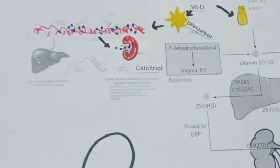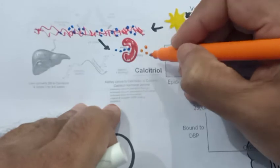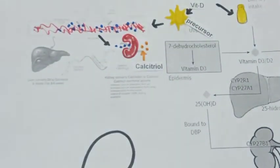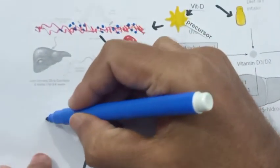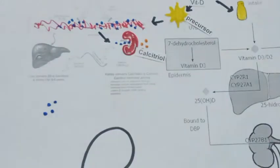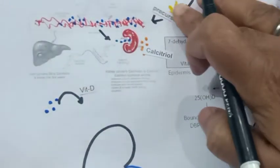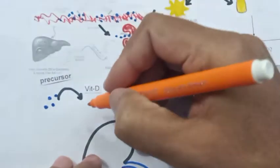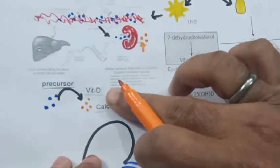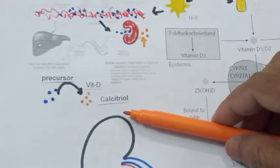The kidney converts the inactive form of vitamin D into its active form, which is called calcitriol. So in short, the kidney converts the inactive form of vitamin D into the active form of vitamin D, which is called calcitriol.